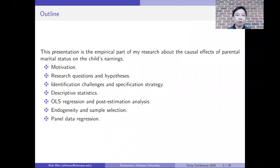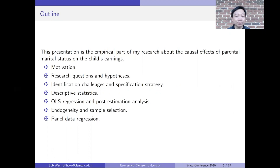There are seven parts of the presentation. The first part is the motivation. Then I will present research questions and my hypothesis. Third, I will point out the identification challenges and propose my specification strategies. Next, I will show the descriptive statistics of the sample, followed by the OLS regressions and post-estimation analysis. Then I will focus on the endogeneity issue and sample selection bias. Finally, I will run the panel data regression.